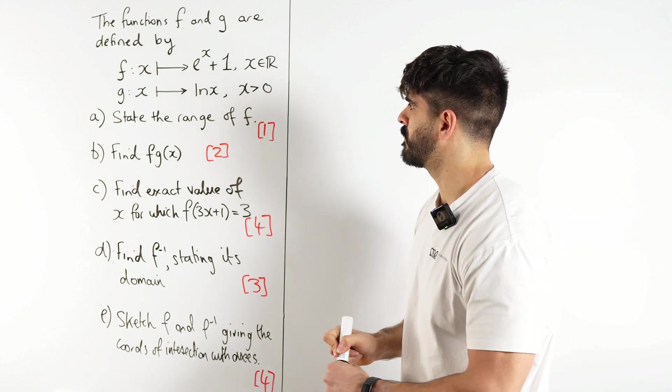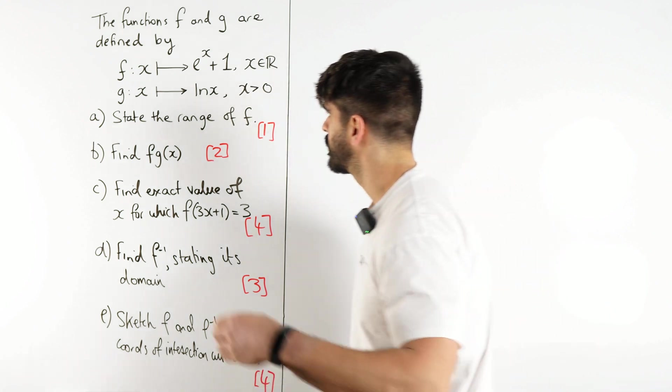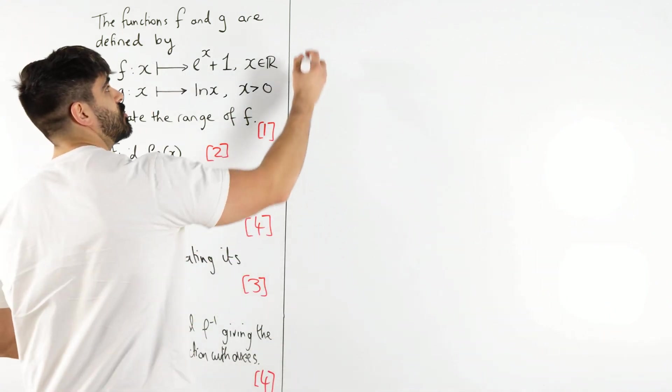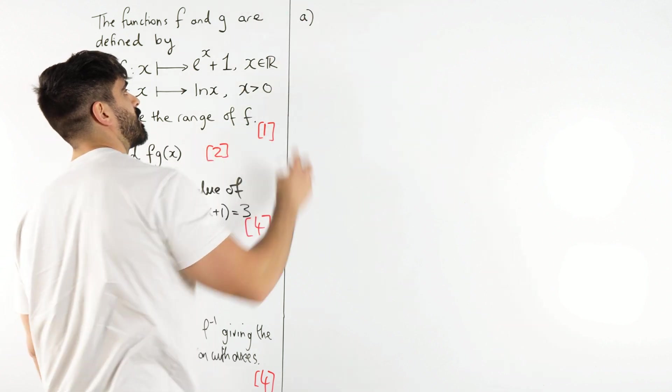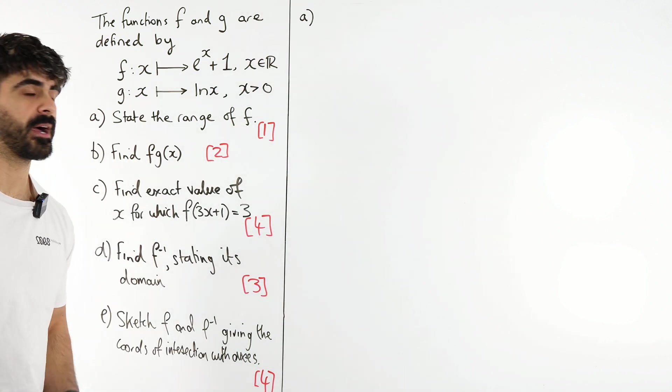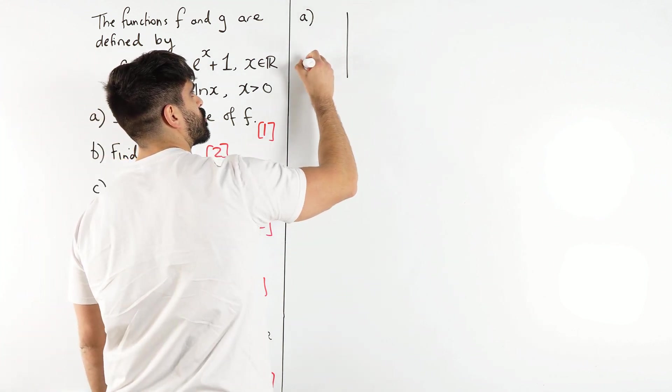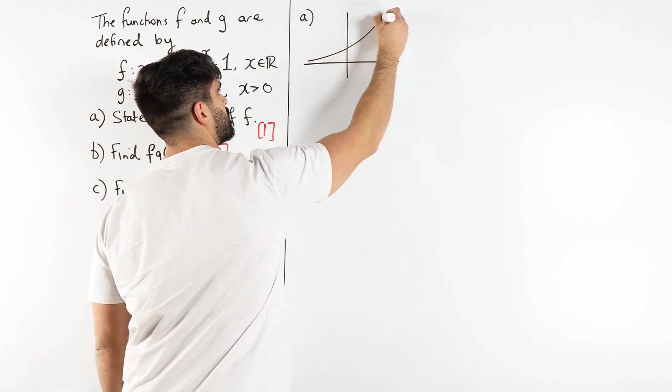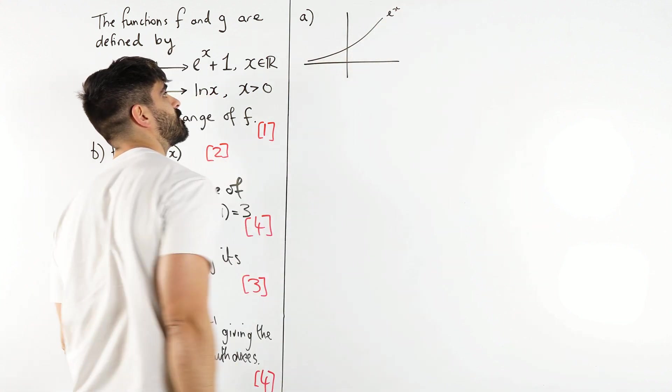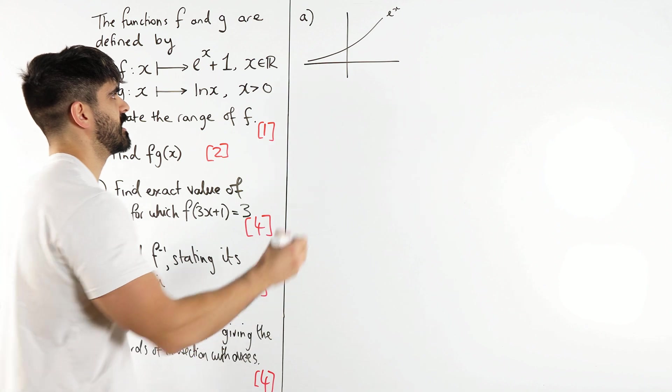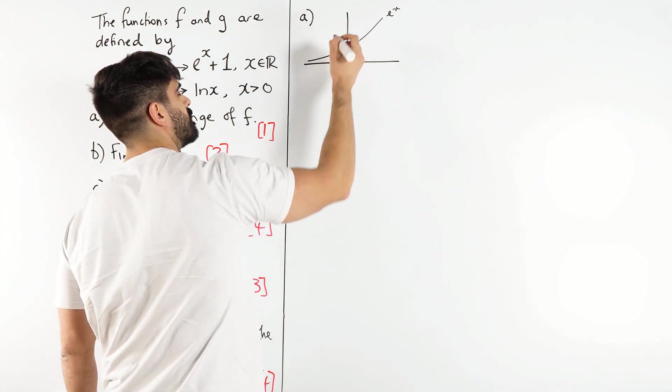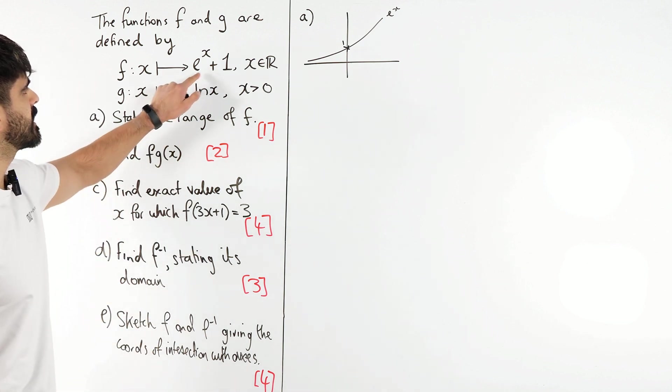Part A says state the range of f. Now I know it's only one mark, but whenever it comes to range, always do a quick sketch of the graph—maybe it will help out later on in the question. So we should all know what e^x looks like. It looks like this, it crosses the y-axis at 1.